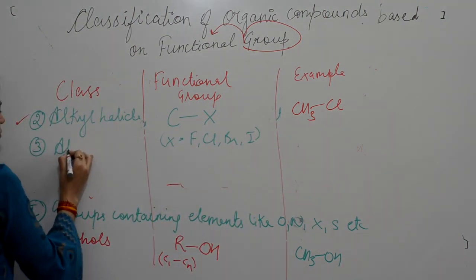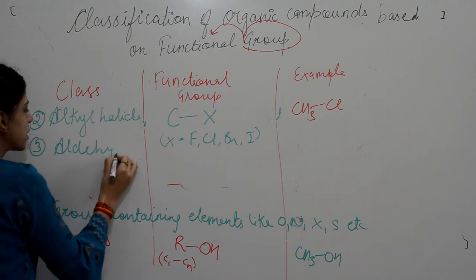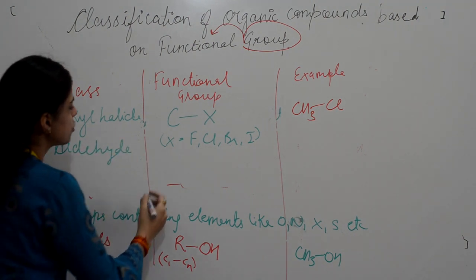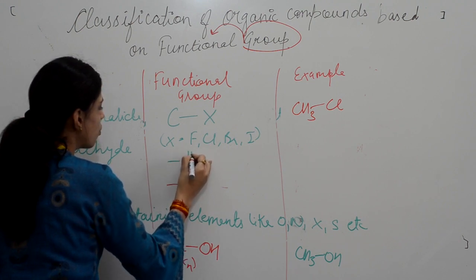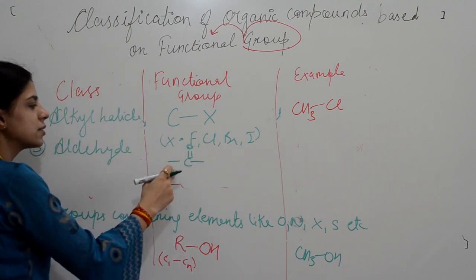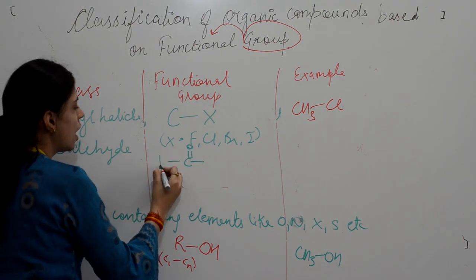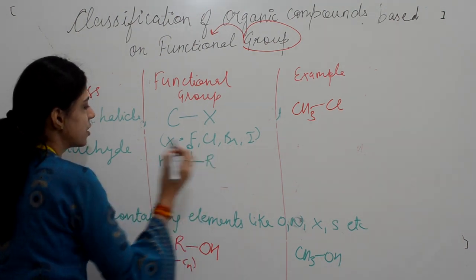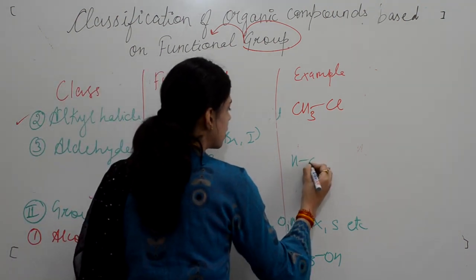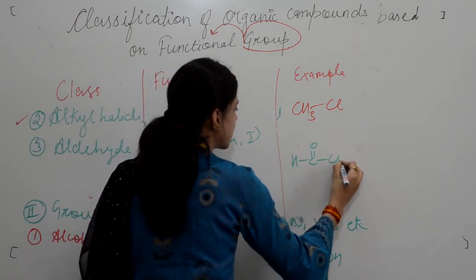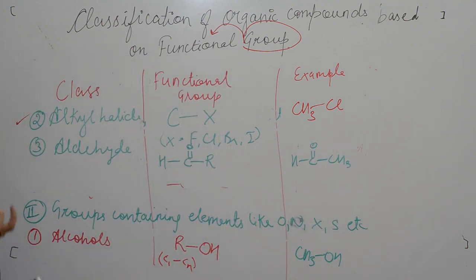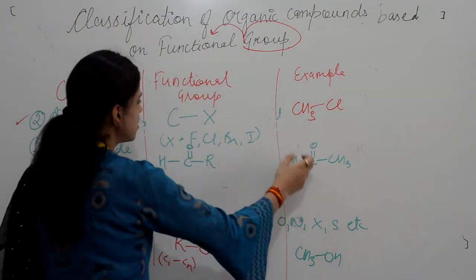Third class is aldehydes. In aldehydes, the functional group is a carbonyl group (C=O). In aldehyde, this carbonyl group is attached to a hydrogen and one alkyl chain. The example is acetaldehyde, written as CH3CHO.